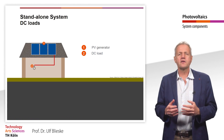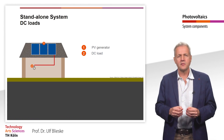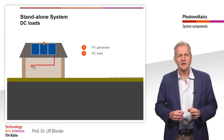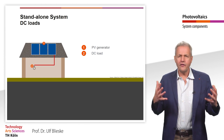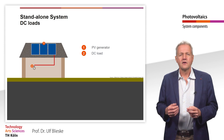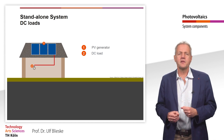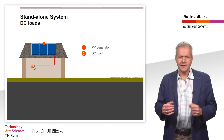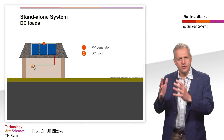We have now learned about the two main components of a PV system — the PV modules themselves and the inverter. For a complete PV system, however, a number of other components are needed. Which components these actually are depends very much on the type of the specific system. Basically, PV systems can be divided into two main groups.